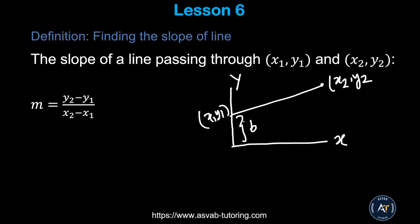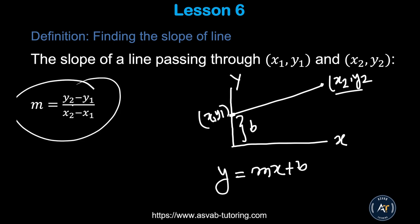First, we'll learn how to find the slope of a line. The equation of a line is y = mx + b, where b is the y-intercept — that's where it connects on the y-axis — and m is the slope. To find the slope between points (x₁, y₁) and (x₂, y₂), use the formula: m = (y₂ − y₁) / (x₂ − x₁).